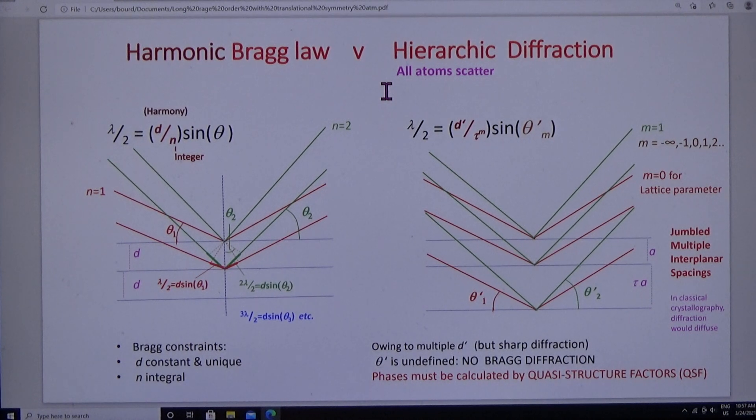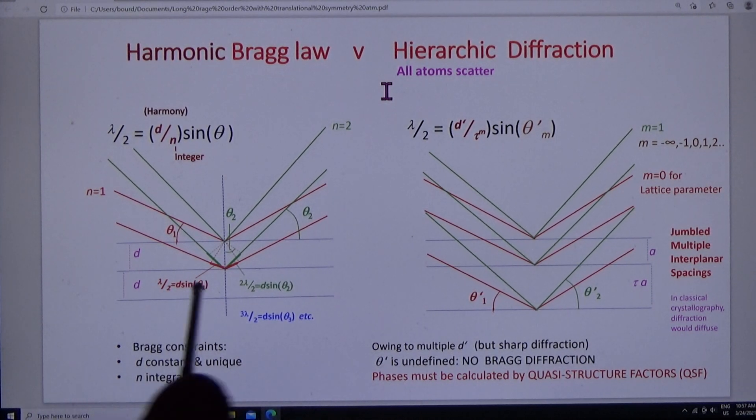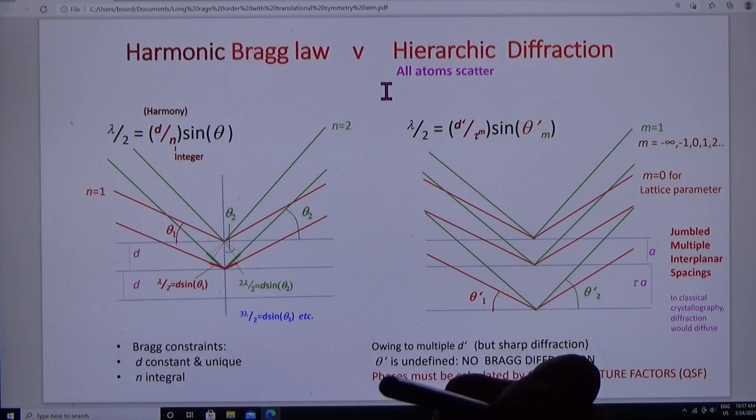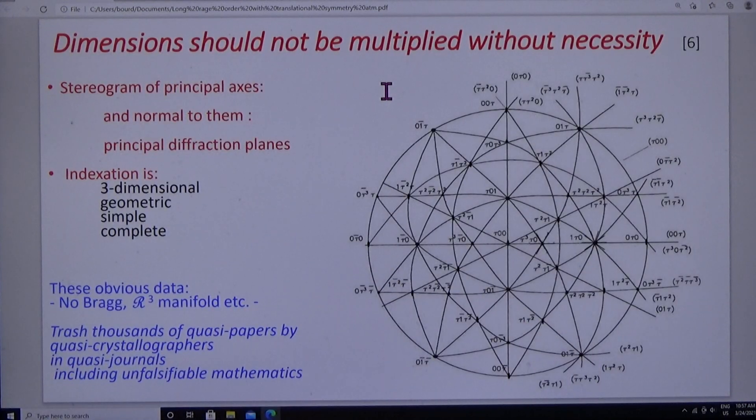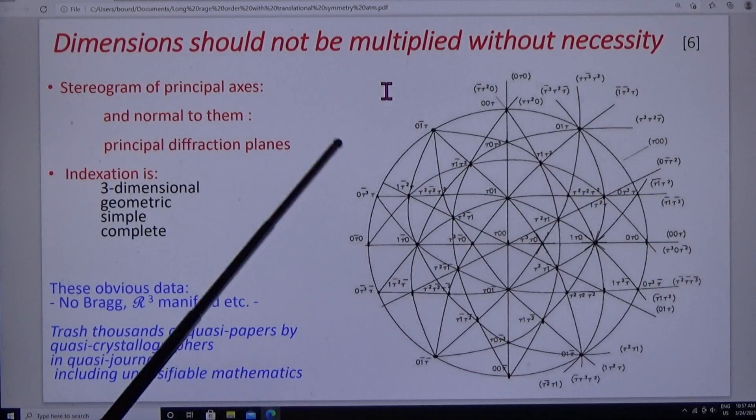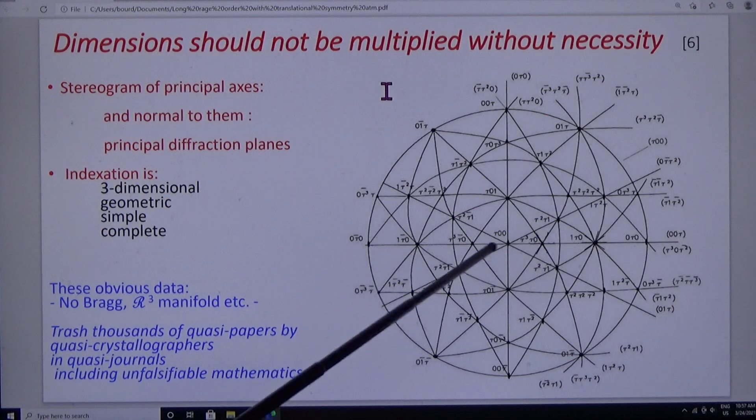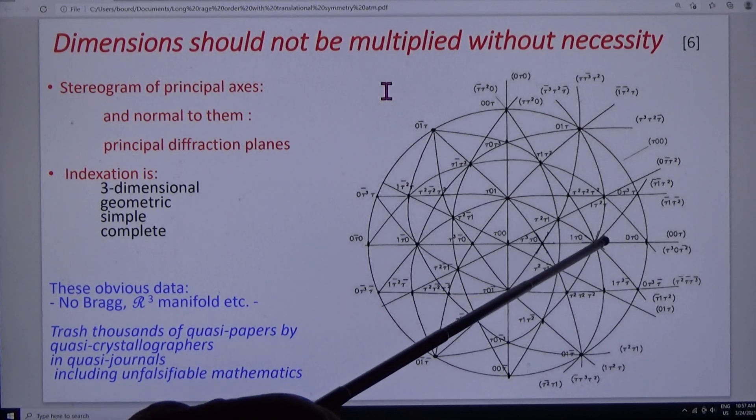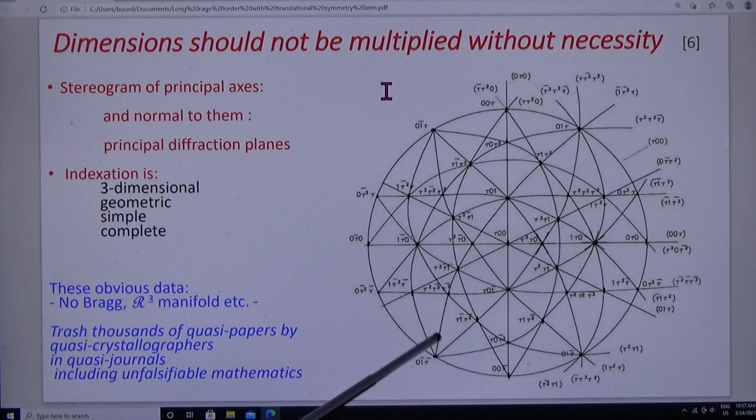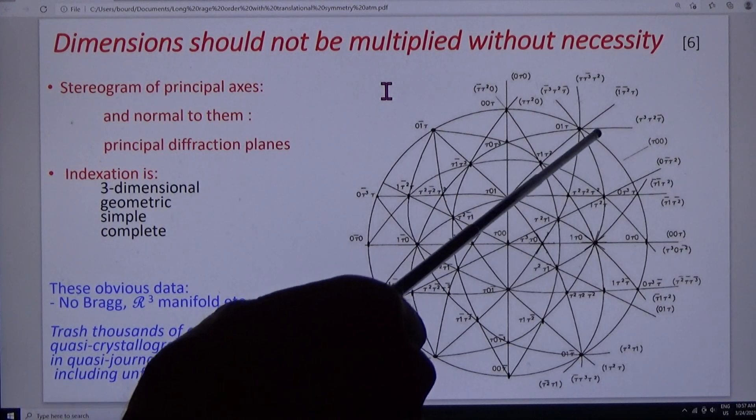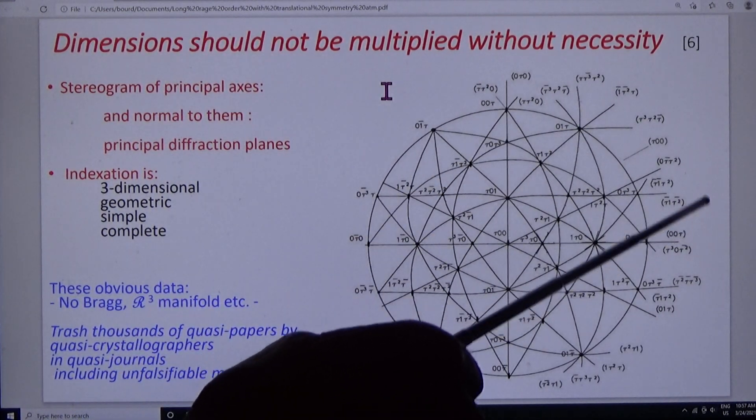We're going to calculate the diffraction properties with the structure factor. But first, we have to correct the indexation. Here's a stereogram of the principal axes of the icosahedral structure. Normal to the principal axes are the diffraction planes.